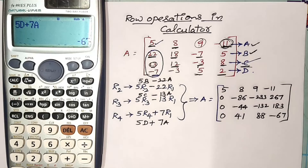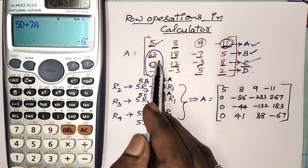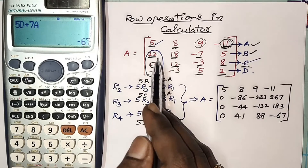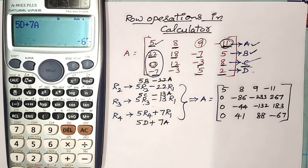My sincere advice is please do the row operations manually. If elements in the matrix are big values then you can use a scientific calculator, otherwise it is better to do the row operations manually. In the next video I will give some more tricks on calculator related to matrices. Thank you very much.